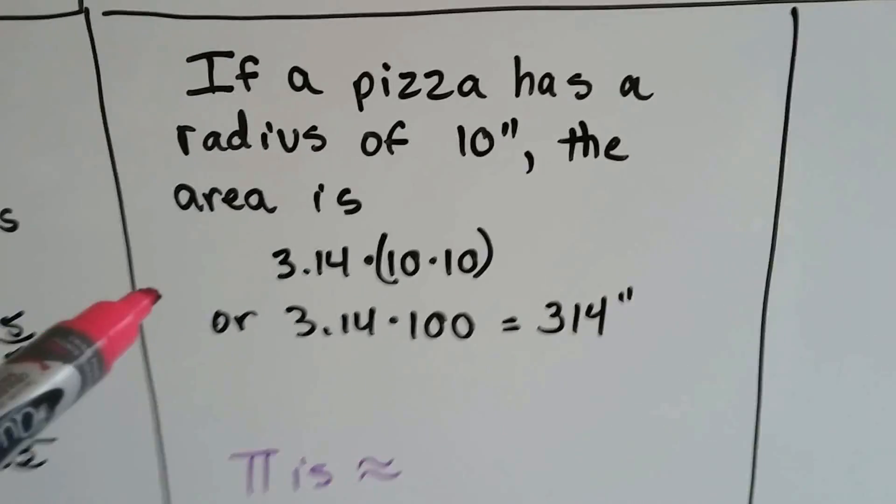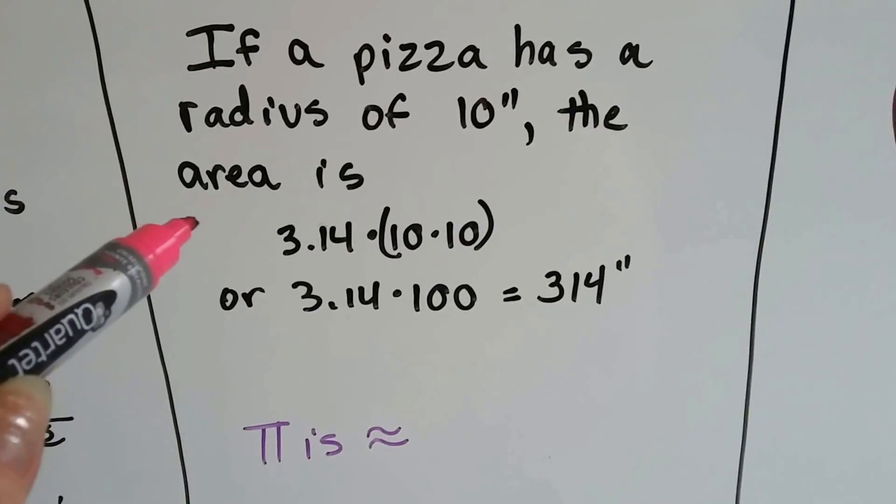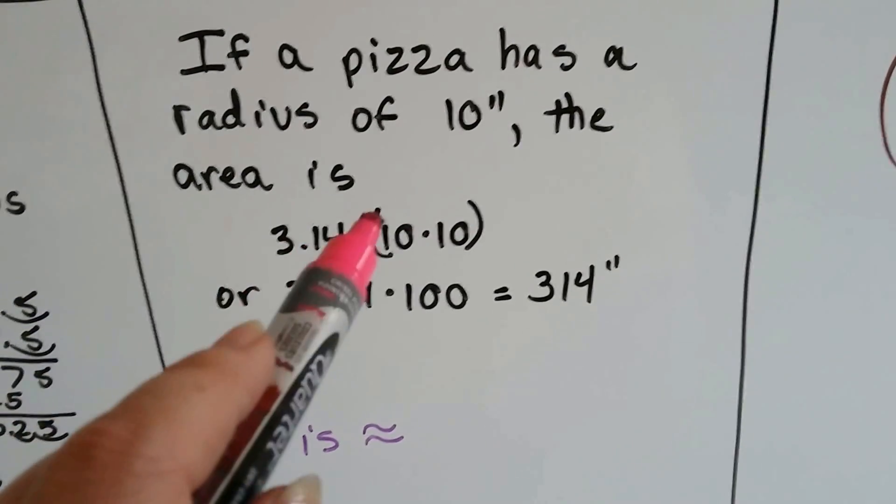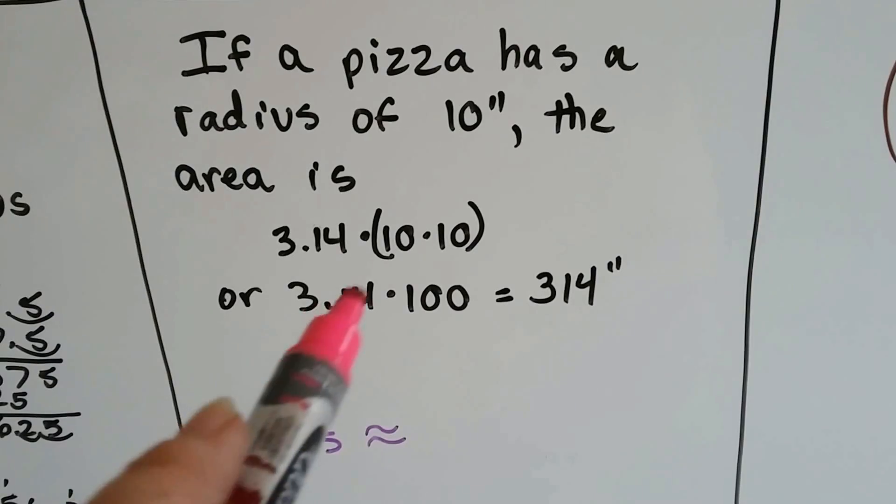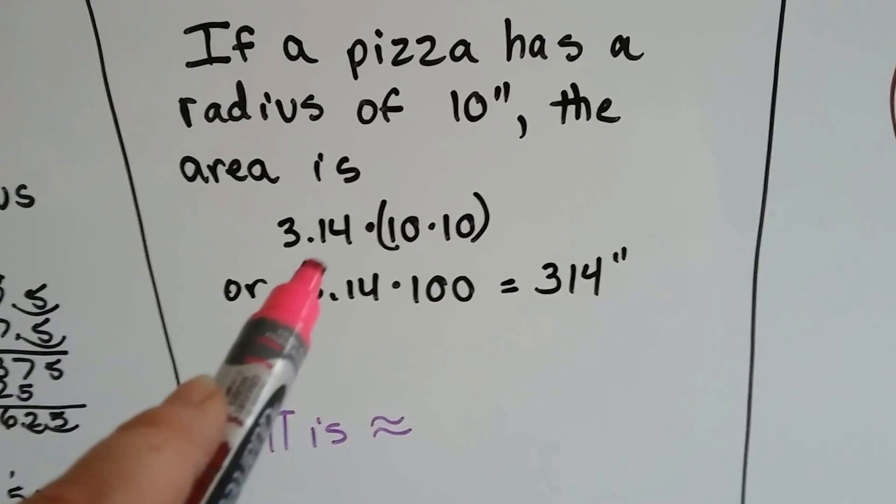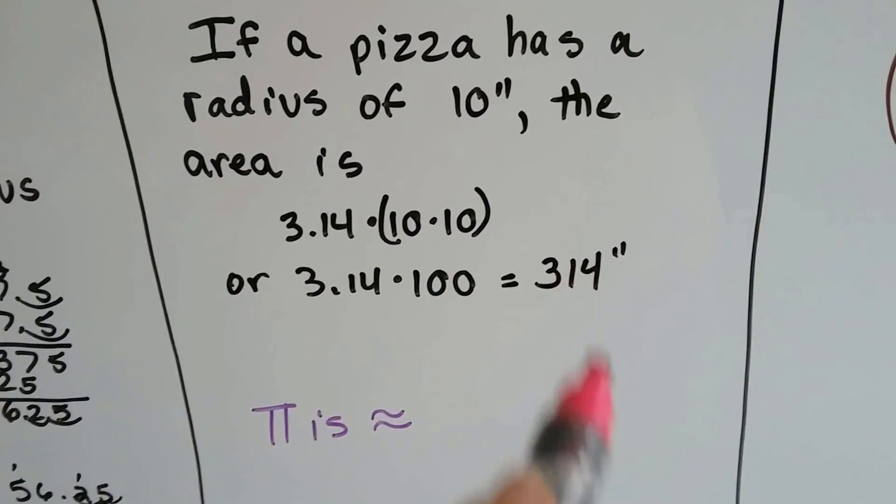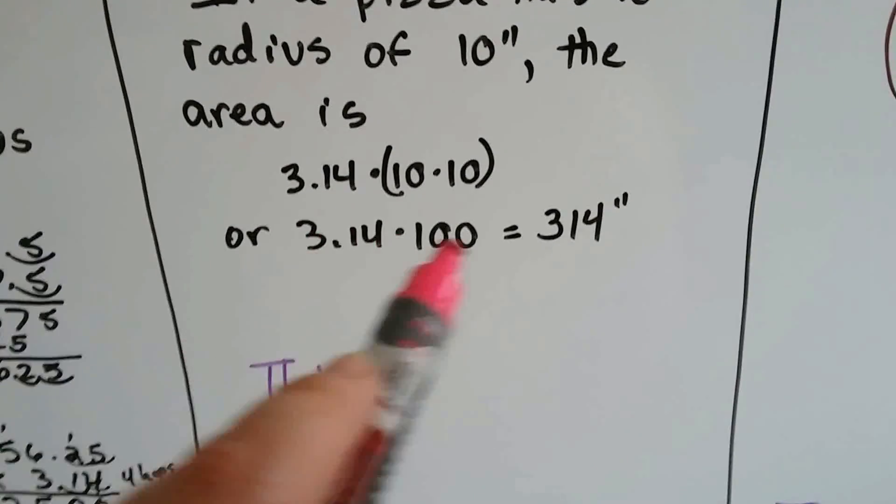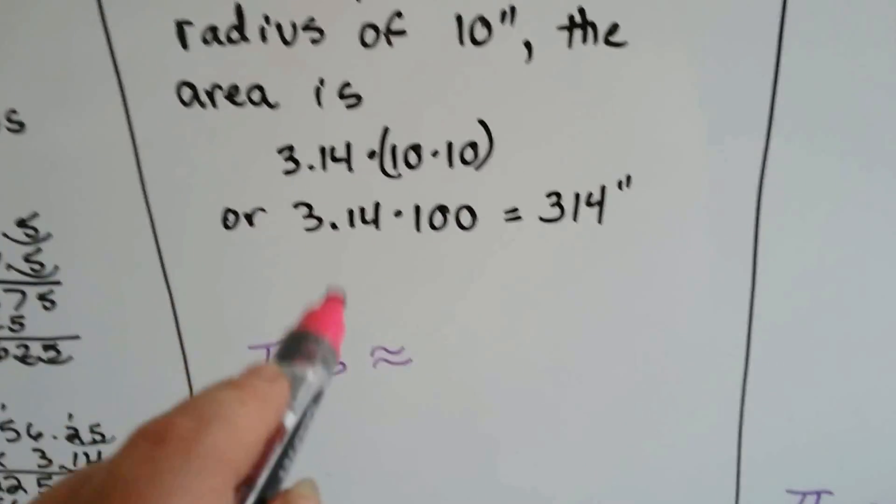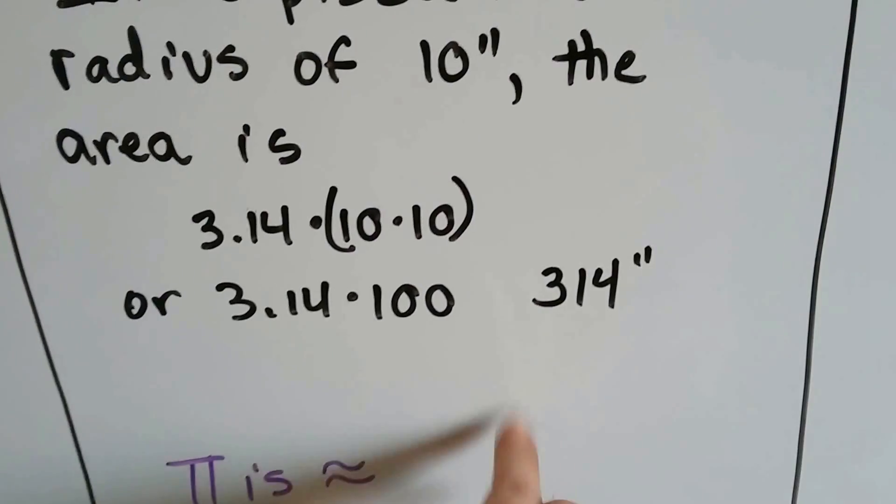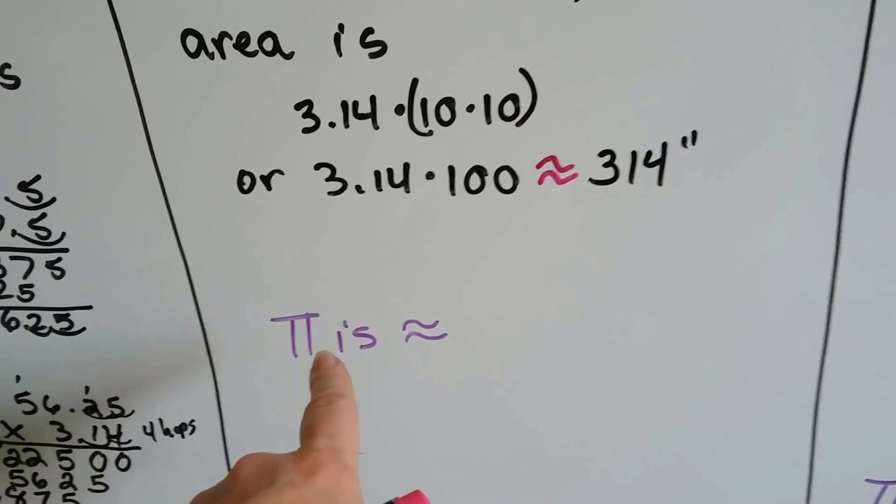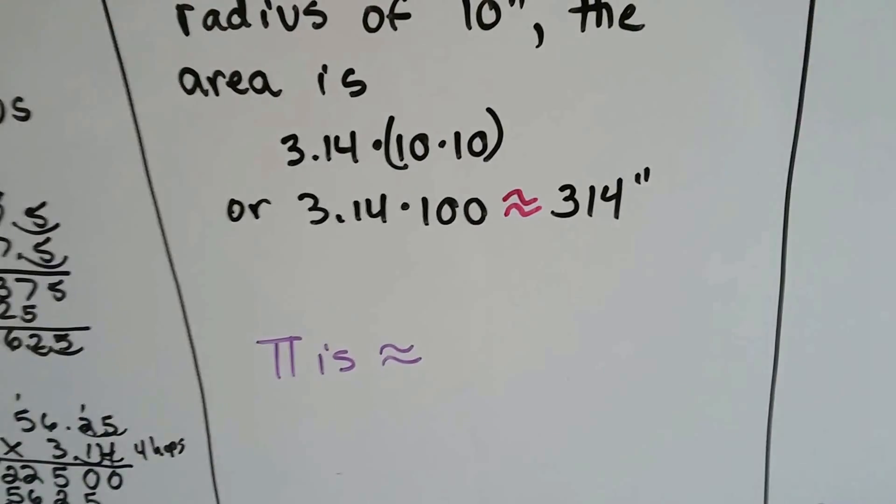If a pizza has a radius of 10 inches, then the area is 3.14, the pi, times 10 times 10, the radius squared. 10 times 10 is 100, so we do 3.14 times 100, or 314 inches would be the area of the pizza. And you have to remember we have to use this sign because we're using pi. So we can't use equal, can we?